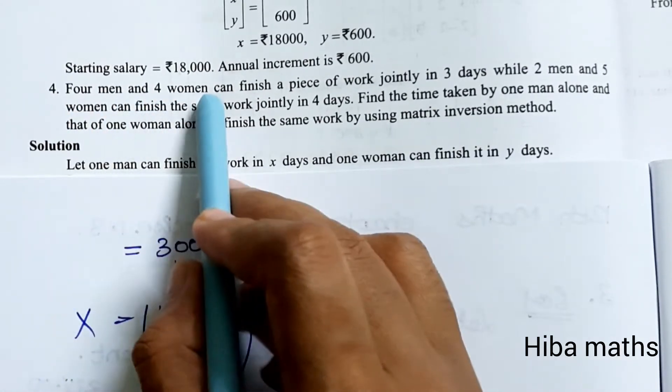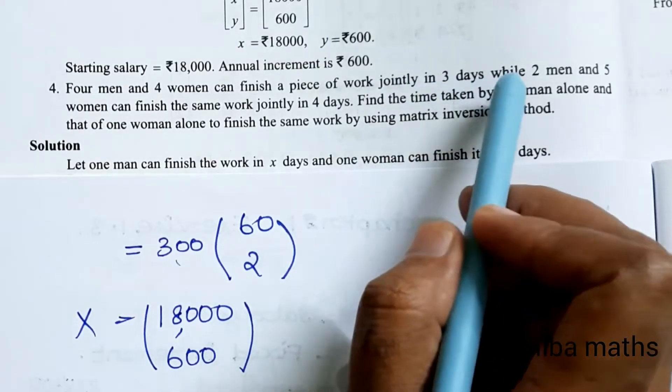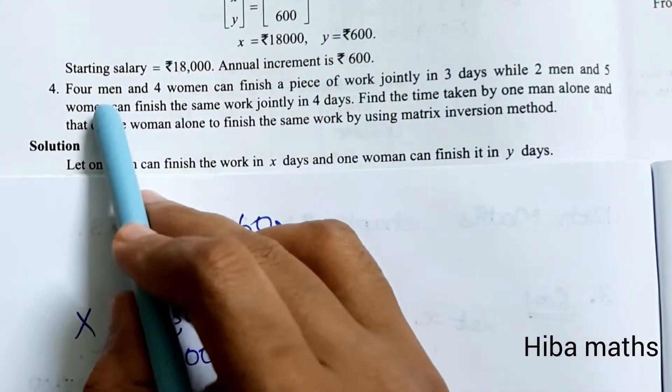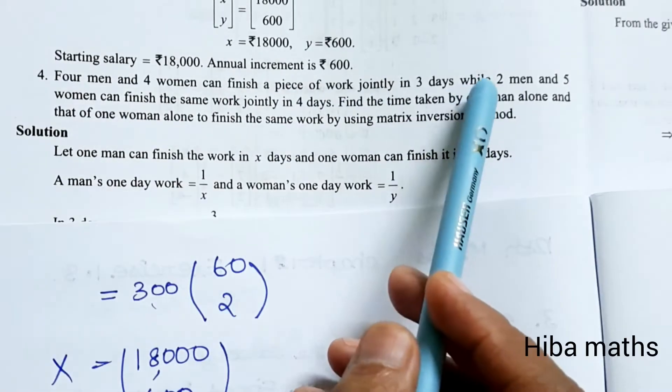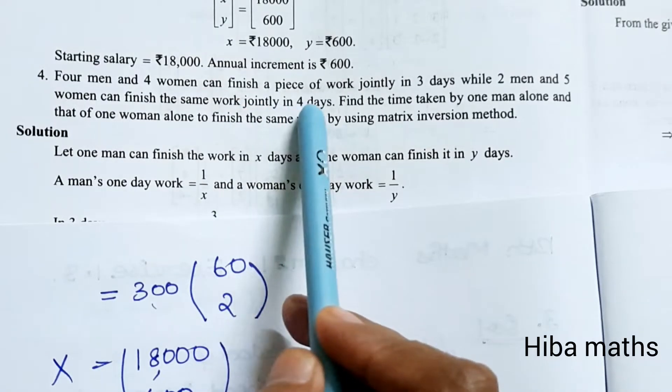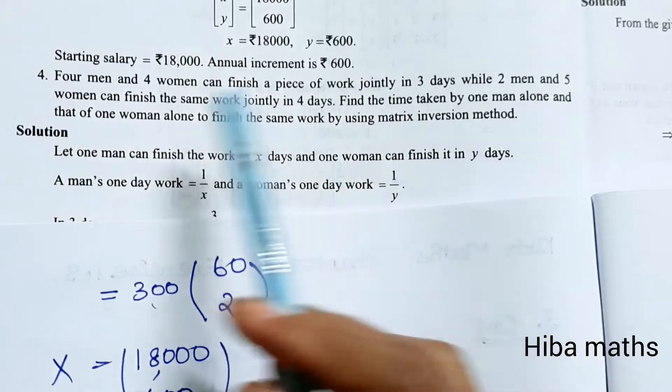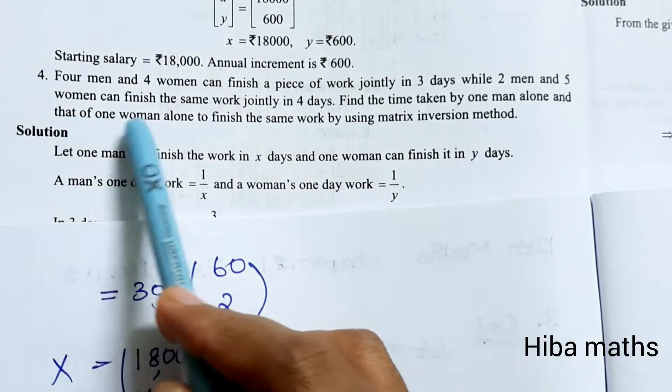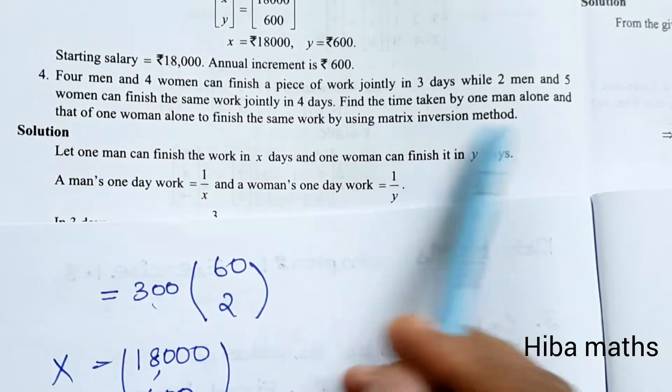4 men and 4 women can finish a piece of work jointly in 3 days, while 2 men and 5 women can finish the same work jointly in 4 days. Find the time taken by one man alone and that of one woman alone to finish the same work by using matrix inversion method.